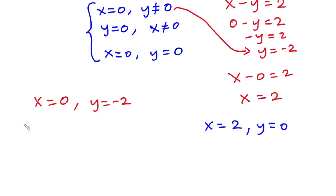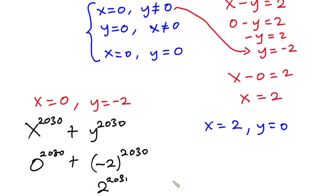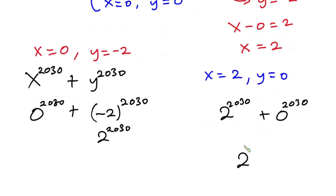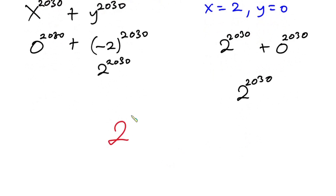Now plug in these values into x to the power 2030 plus y to the power 2030. From the first case: 0 to the power 2030 plus negative 2 to the power 2030 gives 2 to the power 2030, since the exponent is even. From the second case: 2 to the power 2030 plus 0 to the power 2030 is also 2 to the power 2030. So the final answer for this problem is 2 to the power 2030.